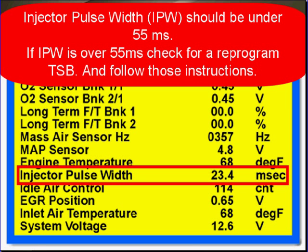Injector pulse width should be under 55 milliseconds. If injector pulse width is over 55 milliseconds, check for a reprogram TSB and follow those instructions.